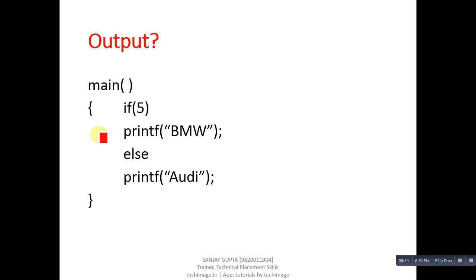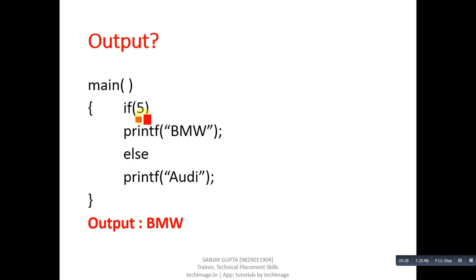The next code segment has an if condition containing only the value 5. The output will be BMW. Whenever we use a constant value in place of a condition, that constant value itself becomes the condition. Remember: when we use 0 in place of a condition, 0 is always treated as false. If we use any non-zero value — whether negative or positive — in place of a condition, it is always treated as true. Here if contains 5, which is non-zero and therefore true, so printf will print BMW on the console.